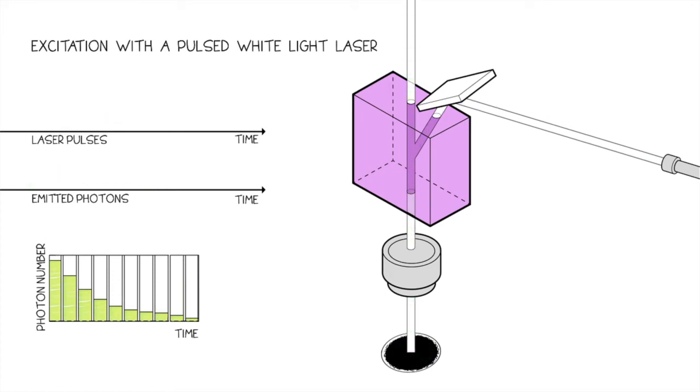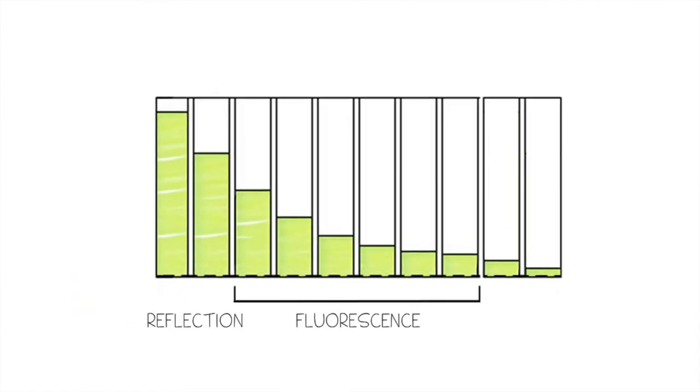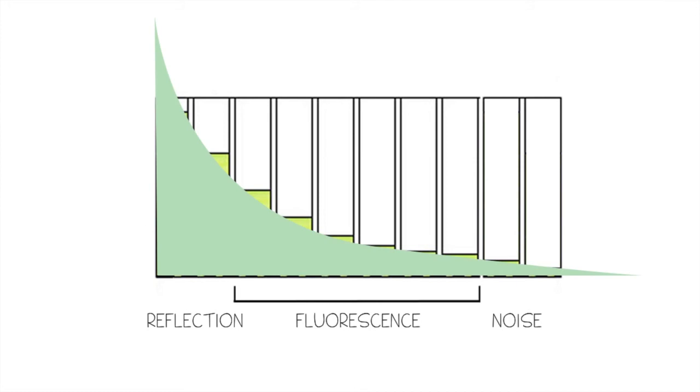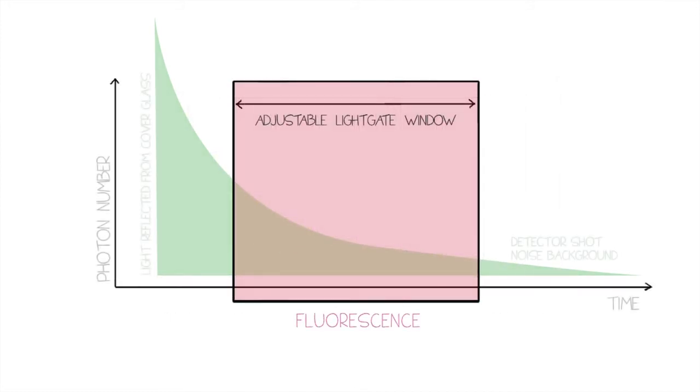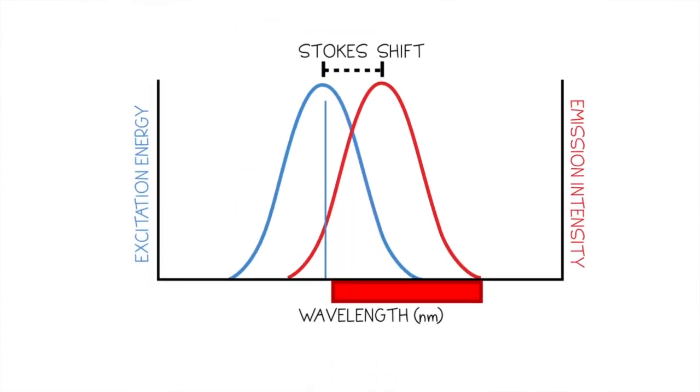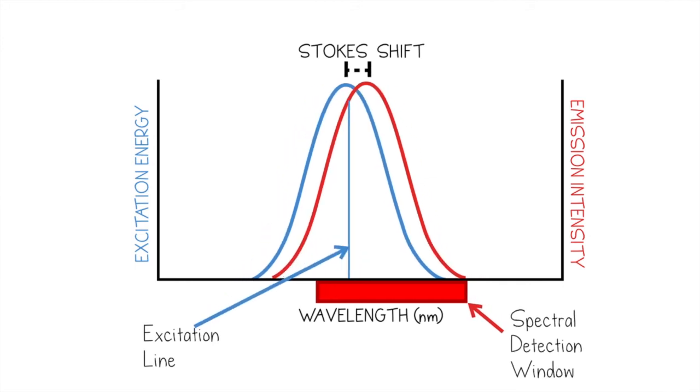For reflections which only occur very early in the pulse, light gate can exclude data from this brief period to prevent it from confounding fluorescent signals and contributing to the image. An additional benefit of light gate is that it maximizes photon harvest, like when working with short Stokes shift dyes, by allowing emission detection over the excitation laser line.